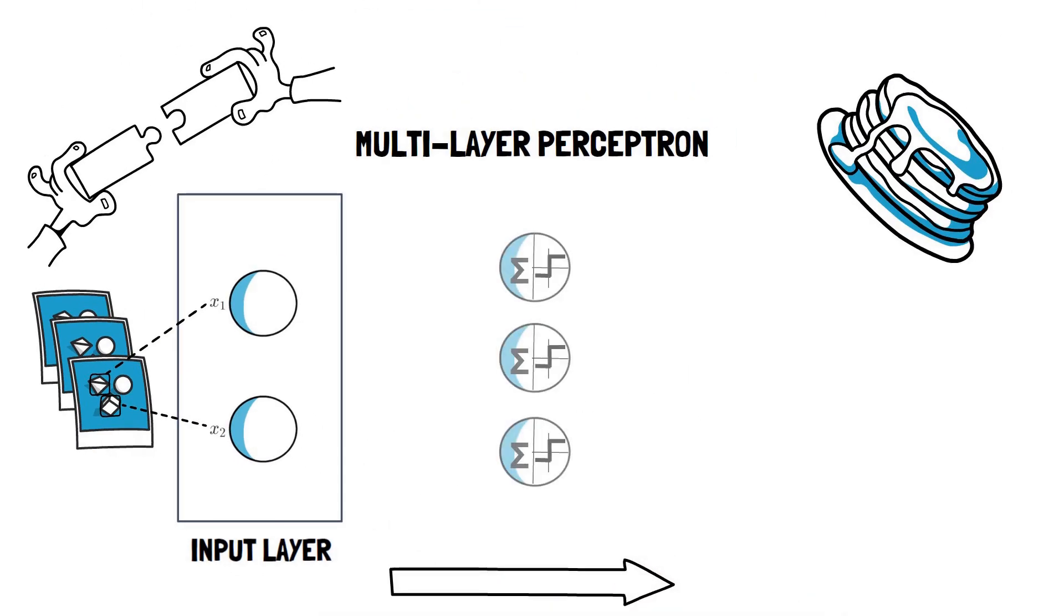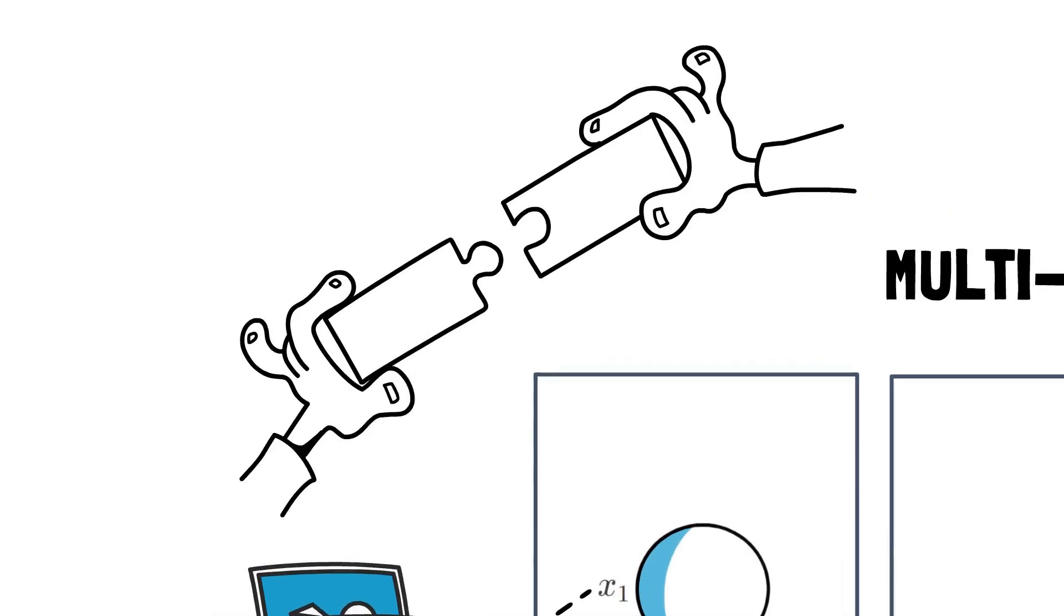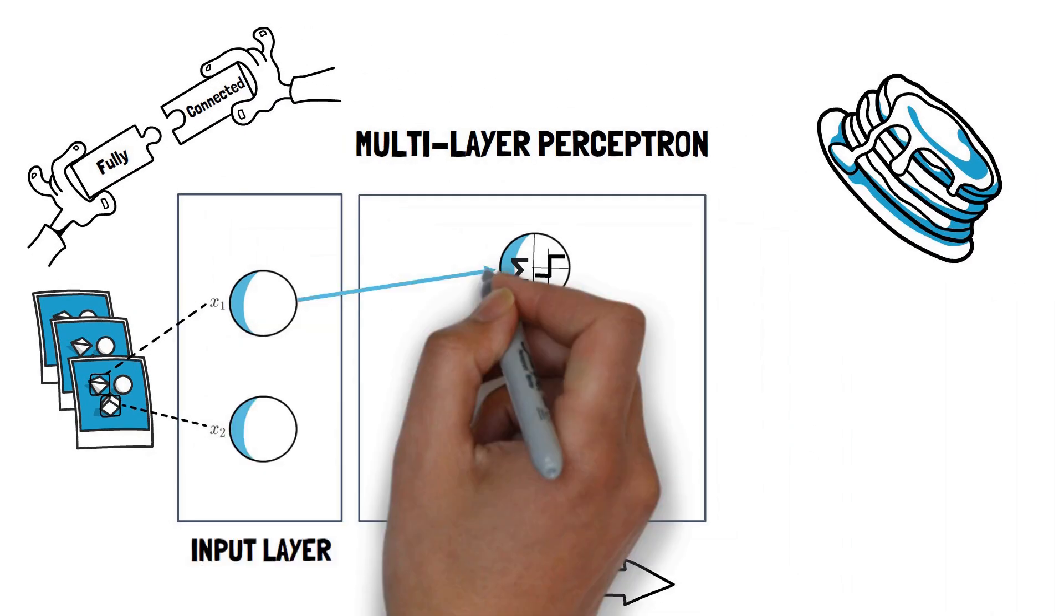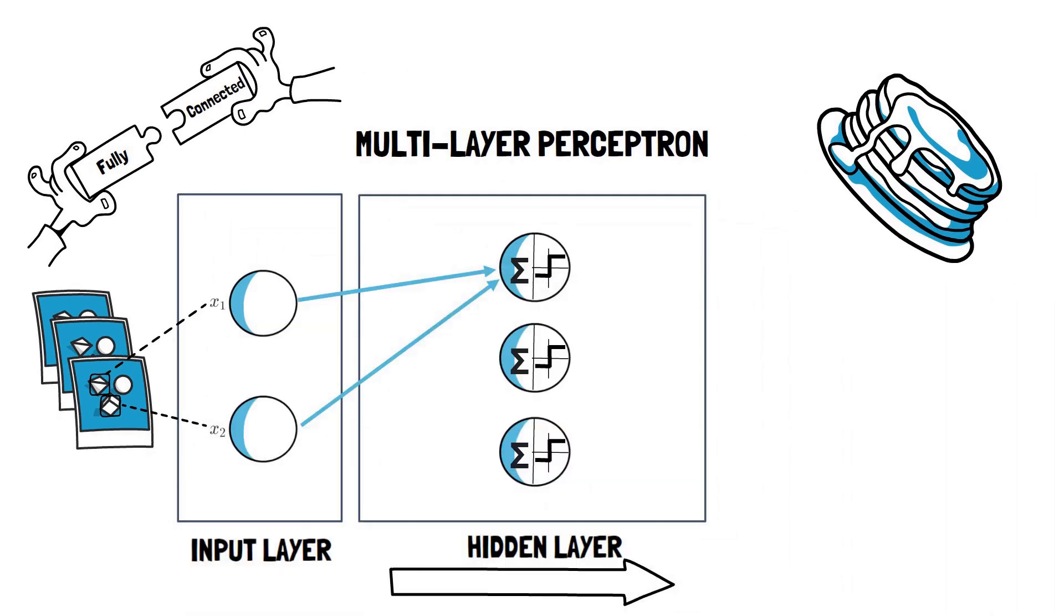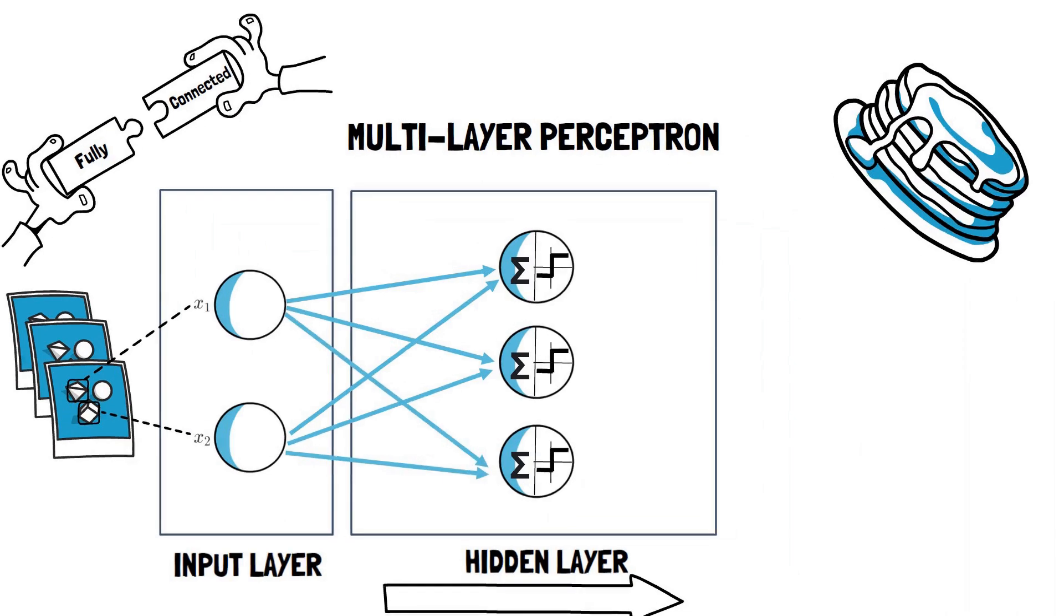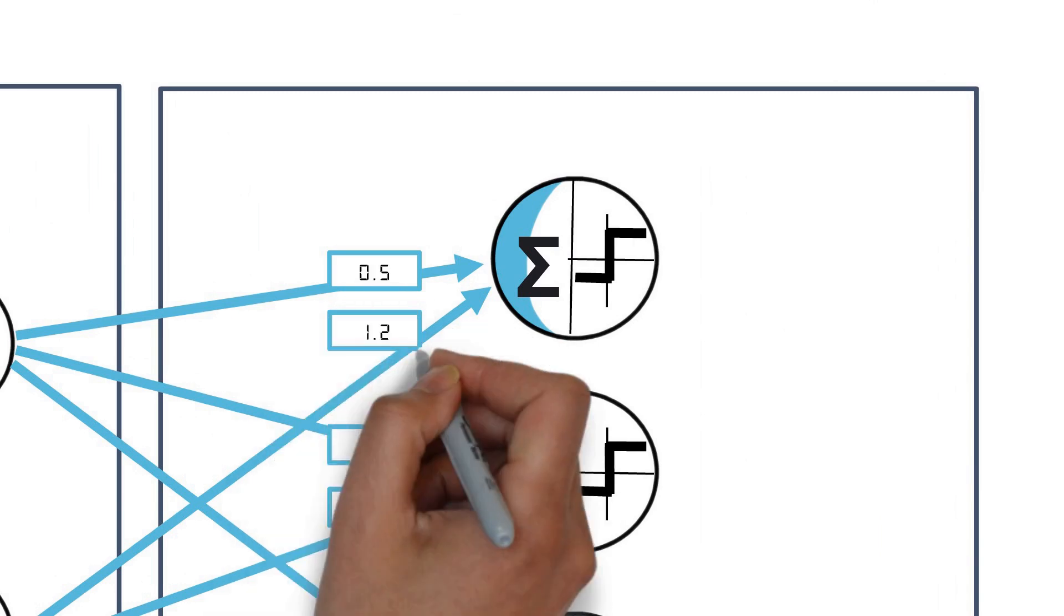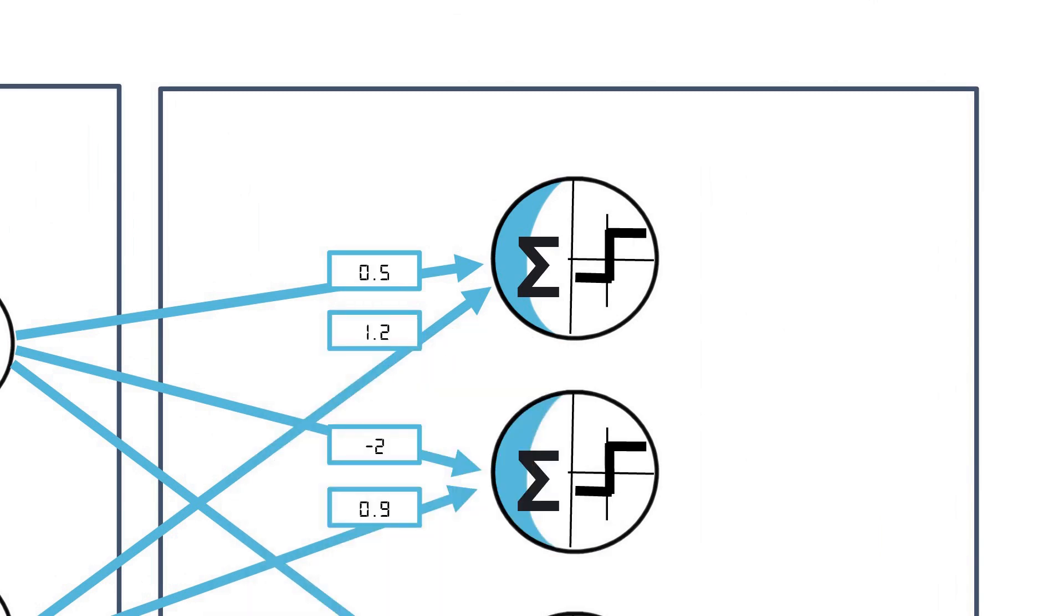Then come the actual perceptrons in the hidden layer. These are typically implemented as fully connected layers. That is, each value of the input layer is connected to each perceptron or unit in the hidden layer. Here we have a compact representation of a perceptron with its unique set of weights.